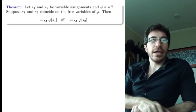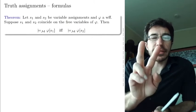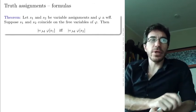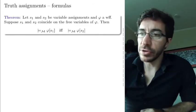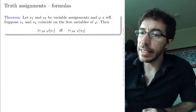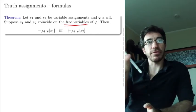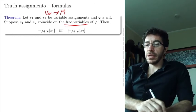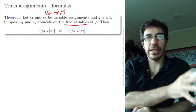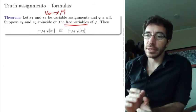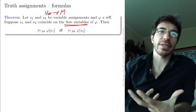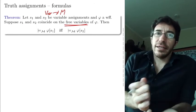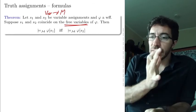One last theorem. If we have two variable assignments s1 and s2, and a well-formed formula φ, and these two variable assignments coincide on the free variables of φ — they give the same element from M for every free variable of φ — then φ is true according to s1 if and only if it's true according to s2. Essentially, all that matters about the variable assignments is what they do on the free variables. If you change the assignments elsewhere, you're not going to change whether the formula is true or not.